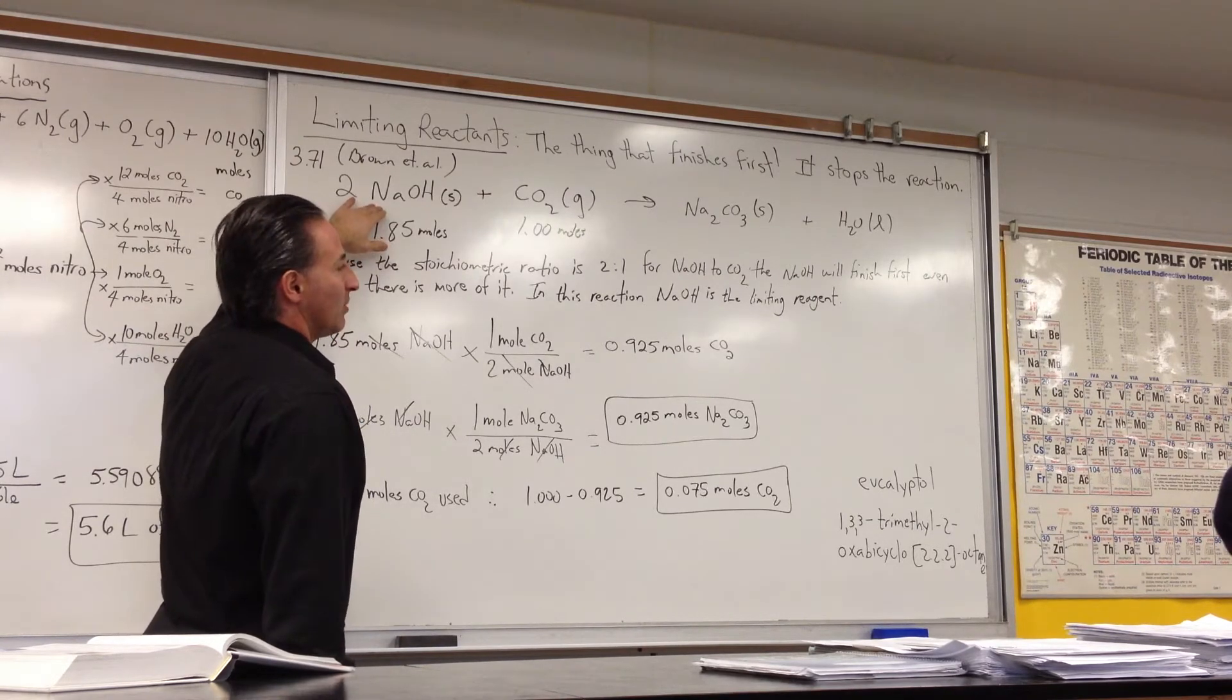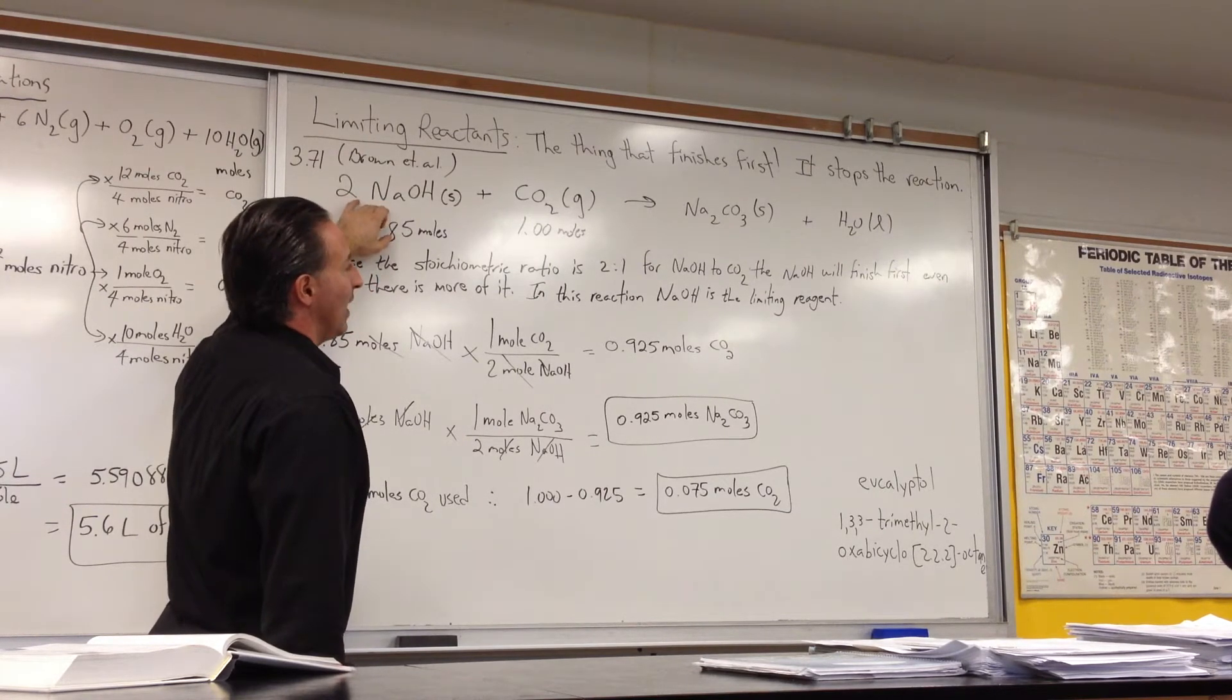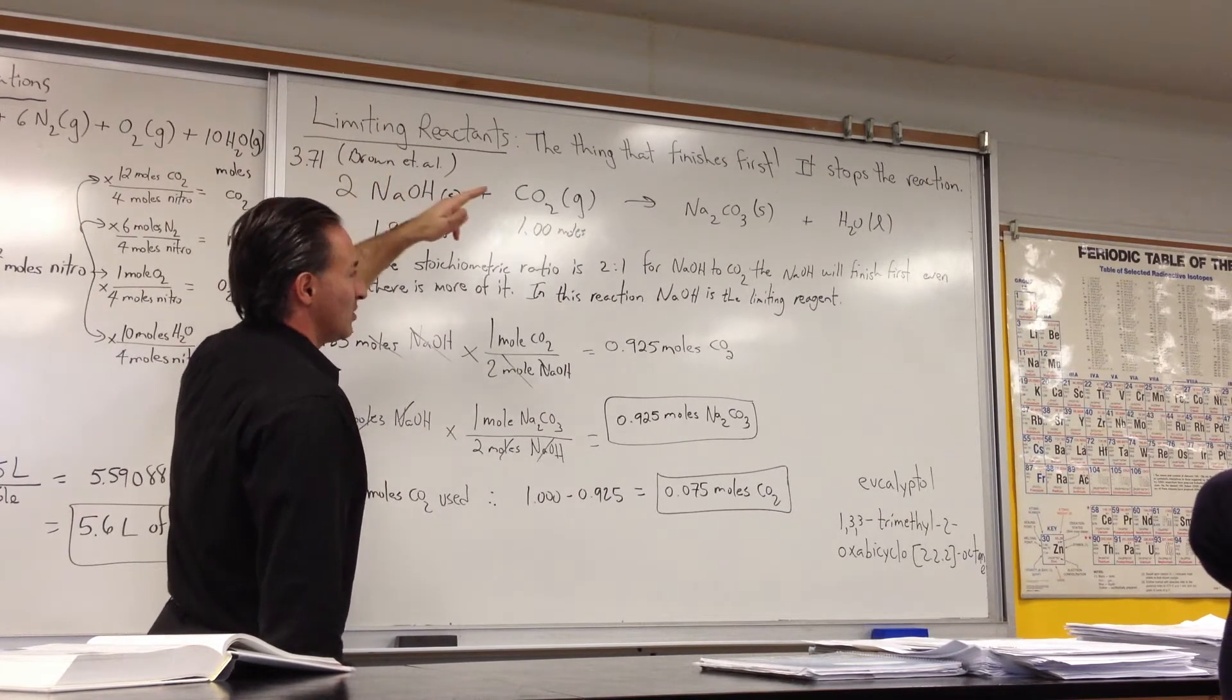So how do we do the calculation? You start from what you know is the limiting reactant. Once you've identified the limiting reactant, every calculation has to start with the limiting reactant, because that's the one that's going to determine how much you get of the other things.